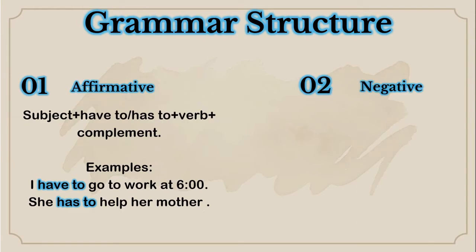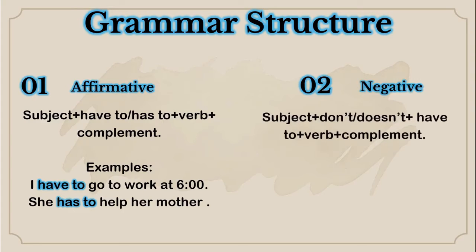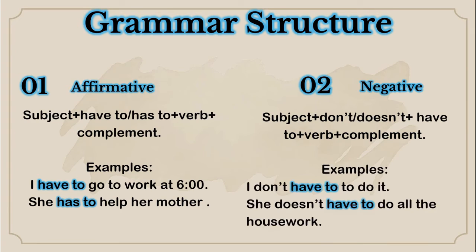Then you have the negative form: subject plus don't or doesn't. Remember that we are going to use the auxiliary do or doesn't depending on the subject, because have to is a semi-modal. So it needs to use an auxiliary plus have to plus the verb plus the complement. Examples: I don't have to do it. She doesn't have to do all the housework.